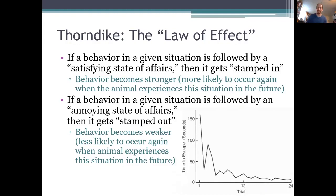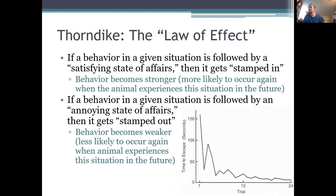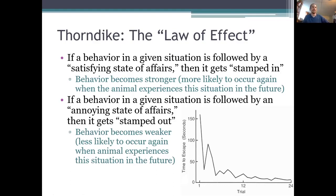Thorndike also noticed that if he kept putting the same cat in the same puzzle box over and over again, that cat would start escaping faster and faster. As shown in the graph here, the escape latency — the time required to escape in seconds — would steadily decrease as the cat experienced more and more trials in the puzzle box. In other words, the behavior the cat had initially just stumbled upon — stepping on the pedal — started becoming more and more likely. That behavior got stronger, and that cat started performing it more and more quickly because of the good, satisfying consequences that followed it.